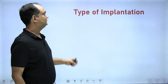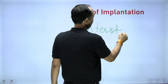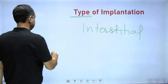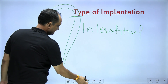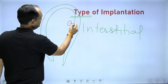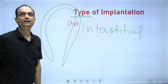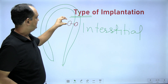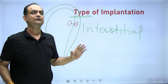The type of implantation in humans is interstitial. Interstitial means that the blastocyst completely disappears from the uterine cavity and completely invades inside the wall of the endometrium. When the blastocyst completely enters into the wall of the endometrium, this is known as the interstitial type.